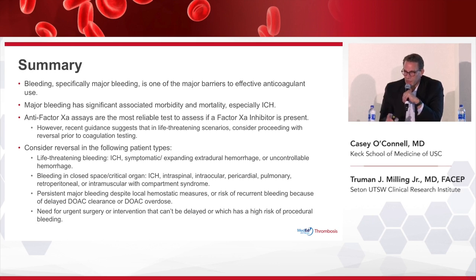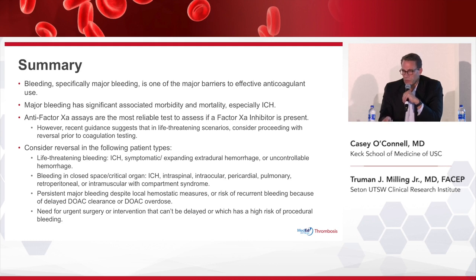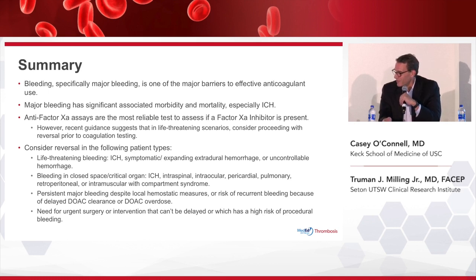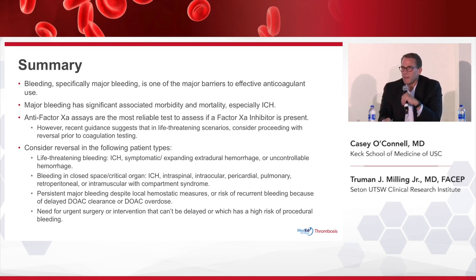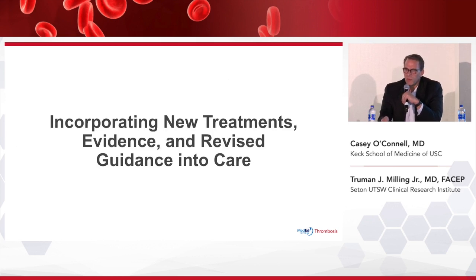Life-threatening bleeding — patients about to bleed to death in a traumatic setting, patients with intracerebral hemorrhage at high risk of death, patients with uncontrollable hemorrhage — those are the ones we reach for a reversal agent. Stable GI bleeds, slow bleeds from other anatomical sites like the nose or urine — as long as they're not hemodynamically unstable, you should not be reaching for a reversal agent. So incorporating these new treatments, we can go over some of the evidence that got us here.